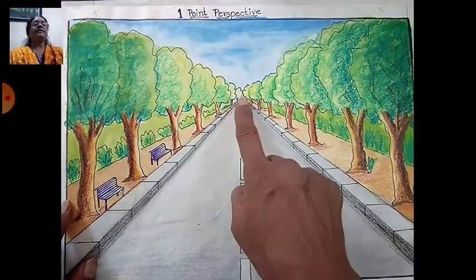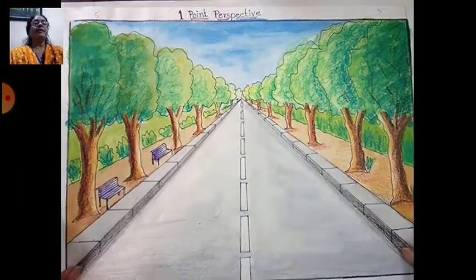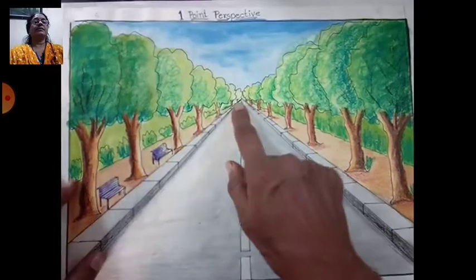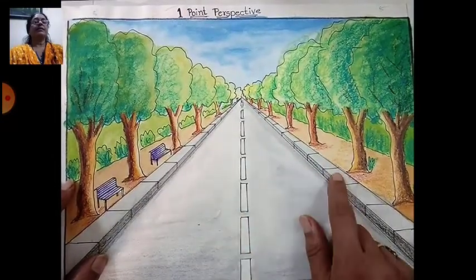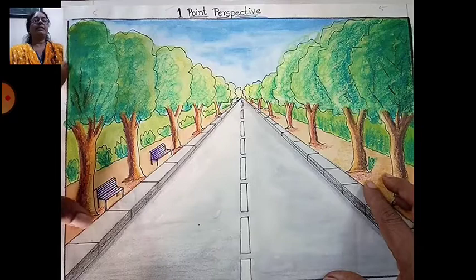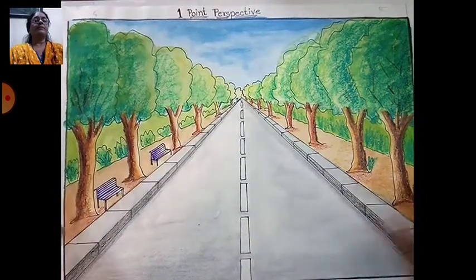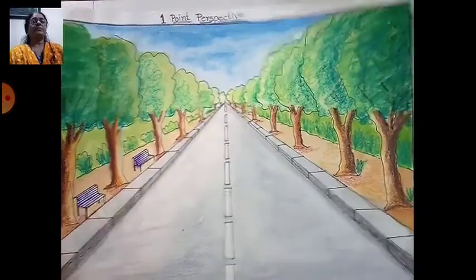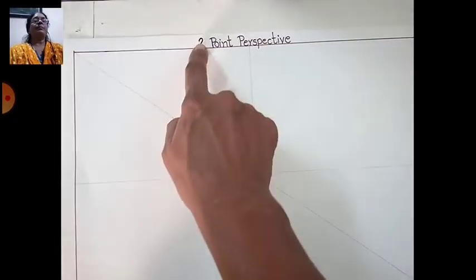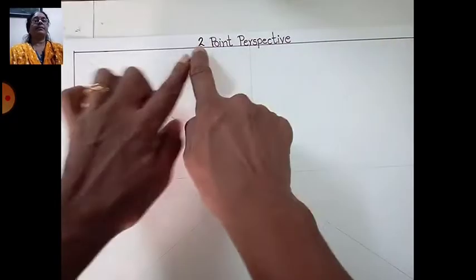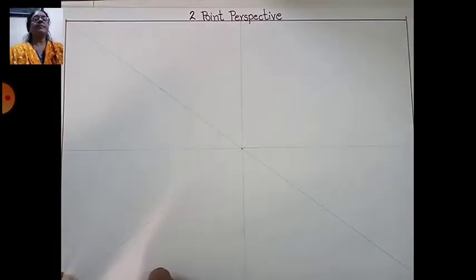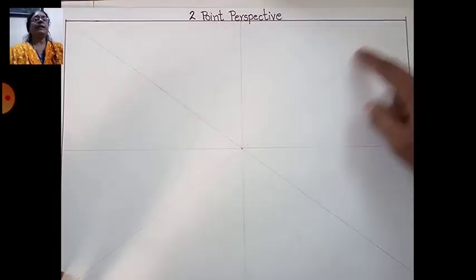This is one-point perspective — see, there is one point, and all the lines collect in one point. See the trees going big to small, and dark to light. Today's topic is two-point perspective. Draw the margin here, one centimeter, and draw the diagonal line.